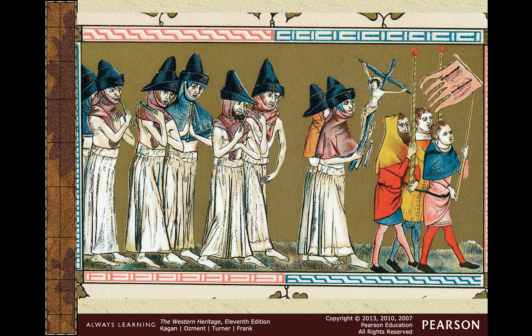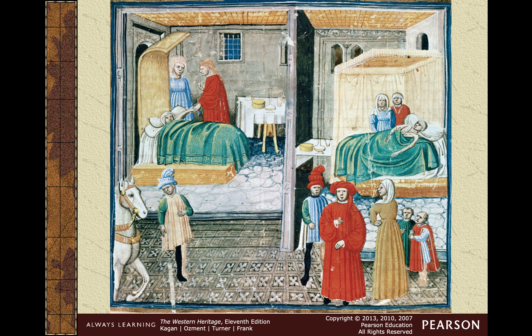Here are the flagellants — a religious group who believed they were being punished by God. This was a religious response to the Black Death. They would walk through cities hitting themselves, acknowledging that they had sinned, and hurting themselves as a way of making things right with God. This really frightened a lot of Europeans. Some people drank, some ran to the hills, and some responded to the Black Death this way — from a religious point of view.